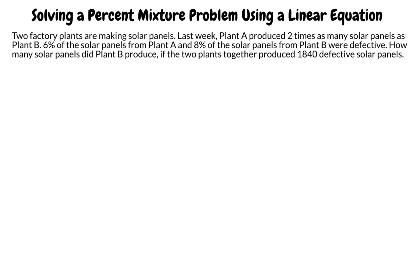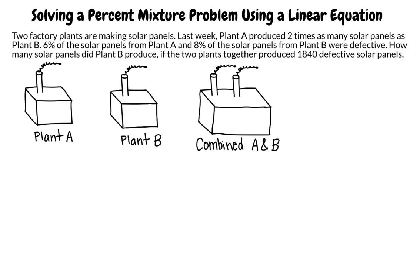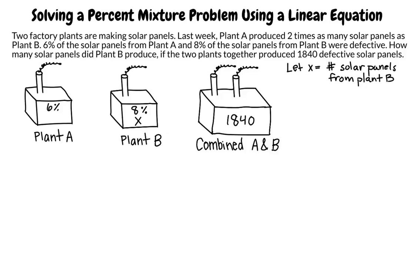Again, we can write out our known information. Of the total panels produced, six percent from plant A are defective, and eight percent from plant B are defective. The total defective panels are 1840. If we let x represent the number of solar panels produced by plant B, then 2x will represent the number of solar panels produced by plant A, since plant A produces twice the amount of plant B.